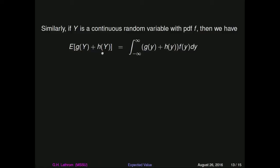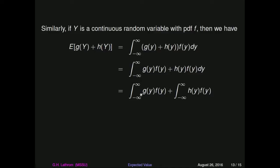For property three, starting with the discrete case: the expected value of the sum of two random variables is the sum over all y's of g of y plus h of y times the PDF. Distributing the PDF and using absolute convergence, we can separate the sums. The first sum becomes the expected value of g of y, the second becomes the expected value of h of y. Similarly for the continuous case: the expected value of g of y plus h of y is the integral of that sum times the PDF; distributing and separating the integrals gives the expected value of g of y plus the expected value of h of y. All these properties confirm that expected value is a linear operator.